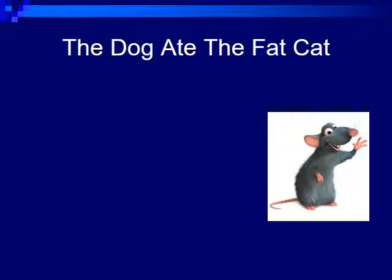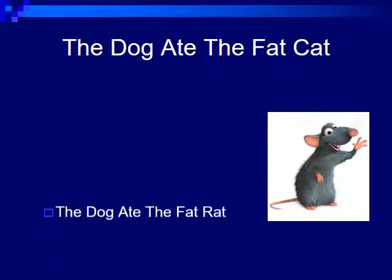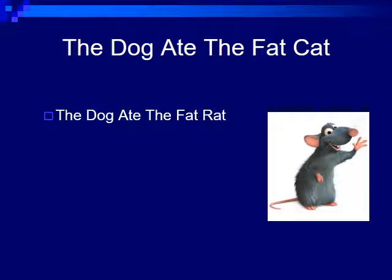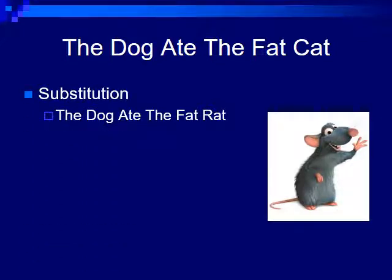Consider the sentence: 'The dog ate the fat cat.' Pretty easy to follow. Now how about: 'The dog ate the fat rat.' A mutation has occurred — this would be an example of a substitution. We went ahead and subbed out the C in 'cat' for an R. You can still understand the sentence, so a substitution mutation actually isn't that bad.